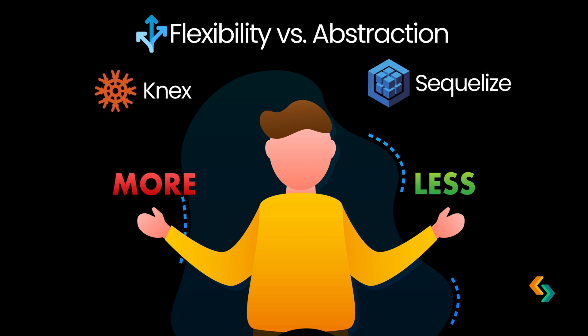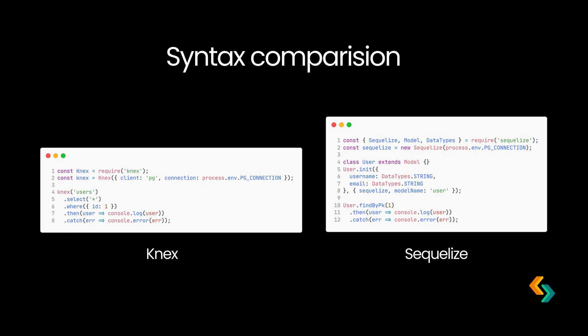Flexibility vs. abstraction: Knex offers maximum flexibility with minimal abstraction, letting you control everything about your database interactions. Sequelize abstracts most of this complexity, making it a better choice for developers focused on quick prototyping or those new to SQL. Now, let's look at how Knex and Sequelize differ in code — these examples will help you see the actual syntax and think about what feels more natural to you. For Knex, here's an example of how you might select a user by ID. You'll notice that this syntax is a lot like chaining SQL commands, giving you low-level control and letting you customize every part of the query. Now let's see the same query in Sequelize, where you define models to work with your data more abstractly. With Sequelize, you're using a FindByPk method directly on the user model — notice how there's no SQL involved. It's a more streamlined approach if you're comfortable with object-oriented methods.